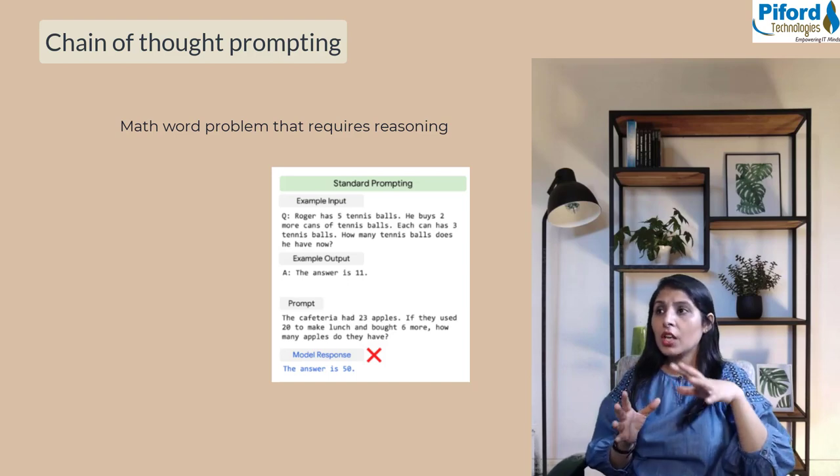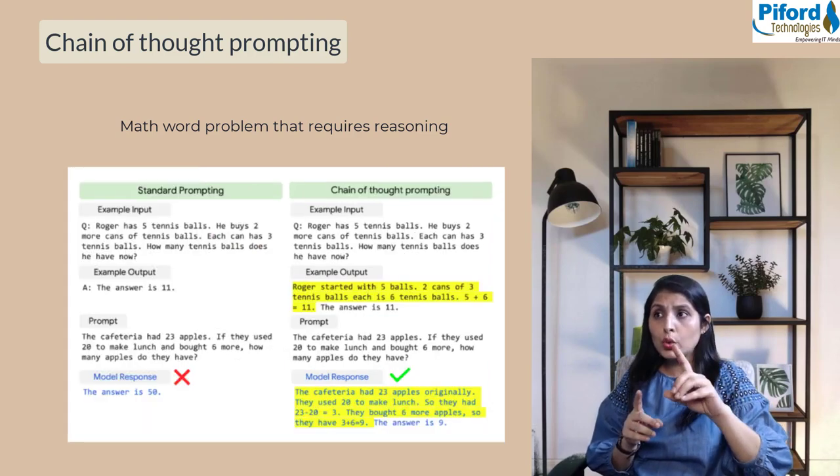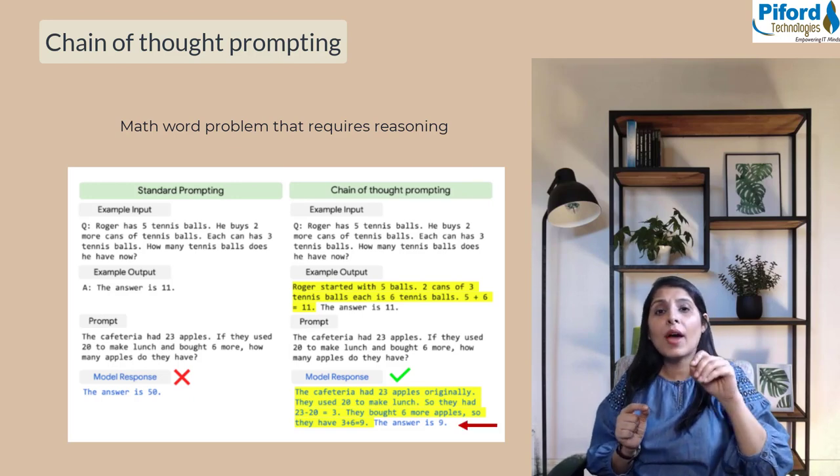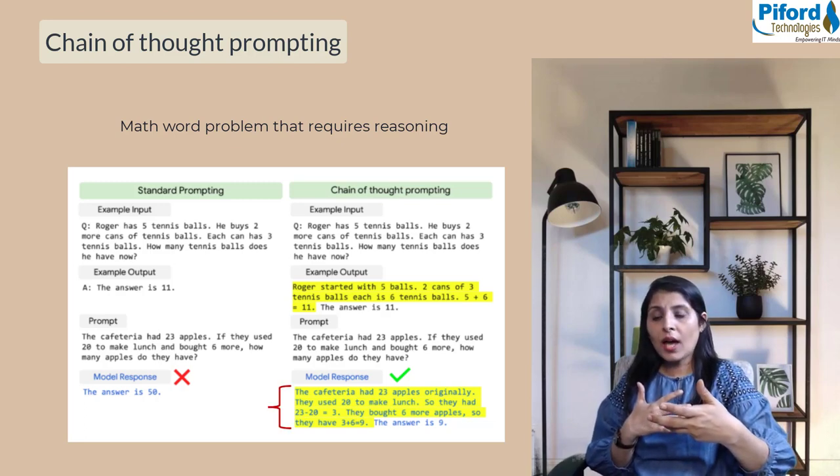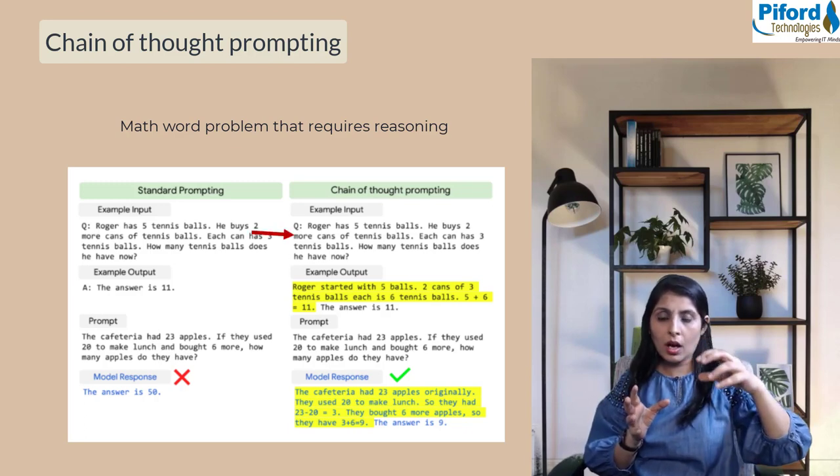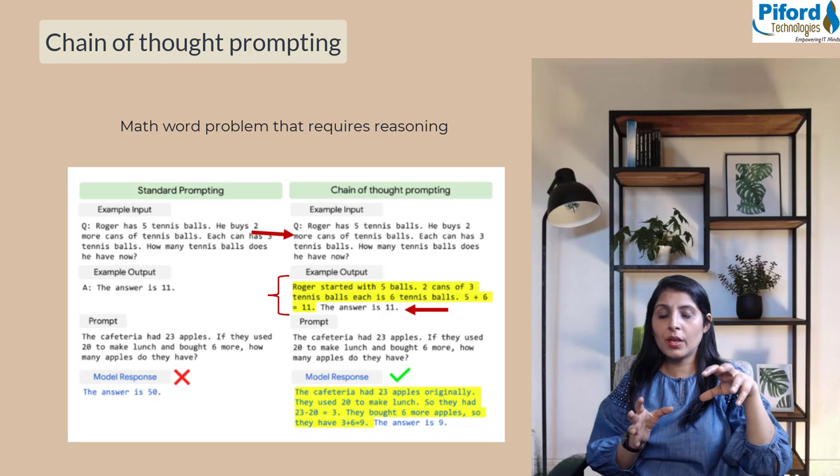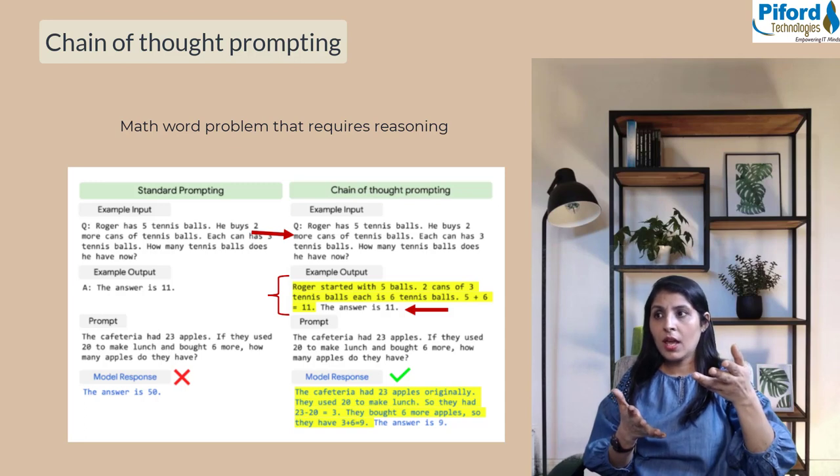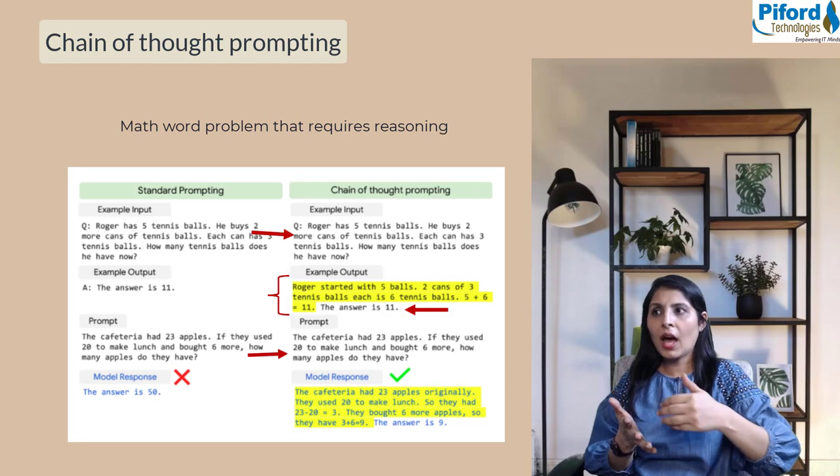With chain of thought prompting, the model is tasked not only to give the answer but also provide the reason for how it arrives at this answer. PaLM will get an input question, provide an output, and also provide a reason. We provide input question, answer, and reason to PaLM, and then for the next question PaLM will follow the same pattern and give a reason for its answer.